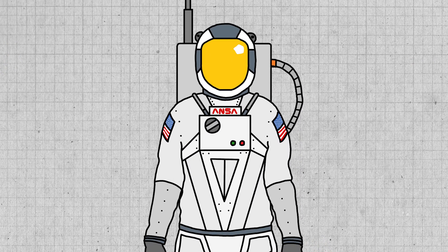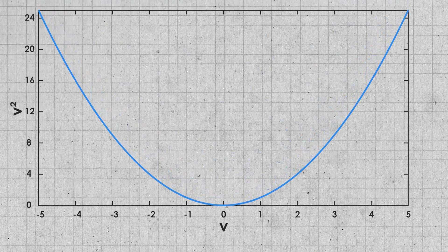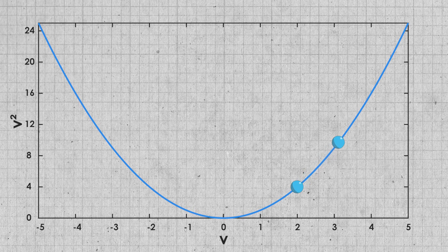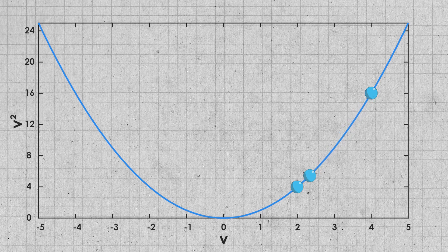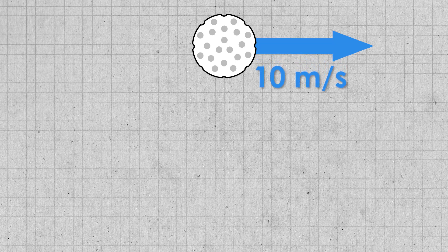Well, it actually has to do with the fact that we're squaring velocity. The square function is not linear. Doubling the input will quadruple the output, and the same is true in reverse. If we halve the input, we quarter the output. Imagine we have a one-dimensional velocity again, equal to 10 meters per second. If we square that, we get 100.